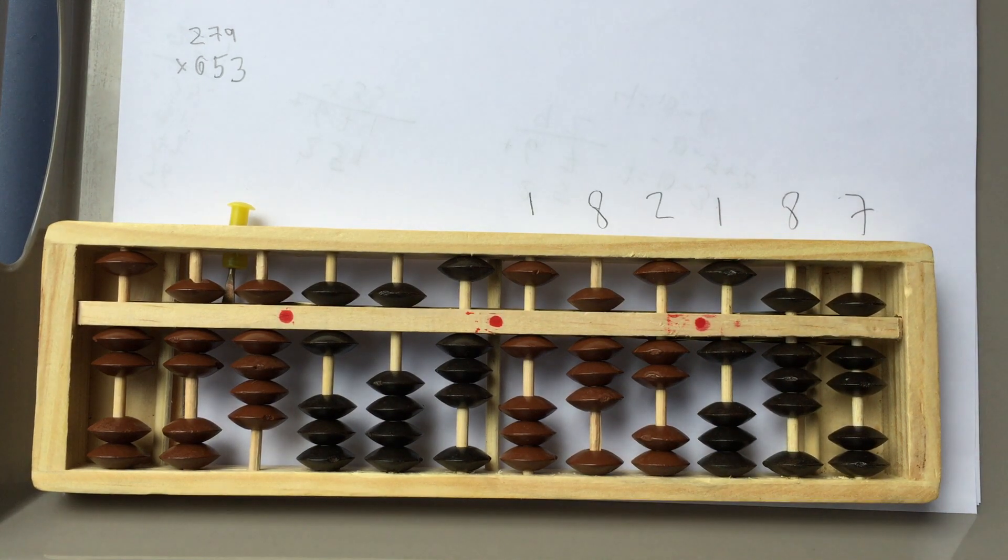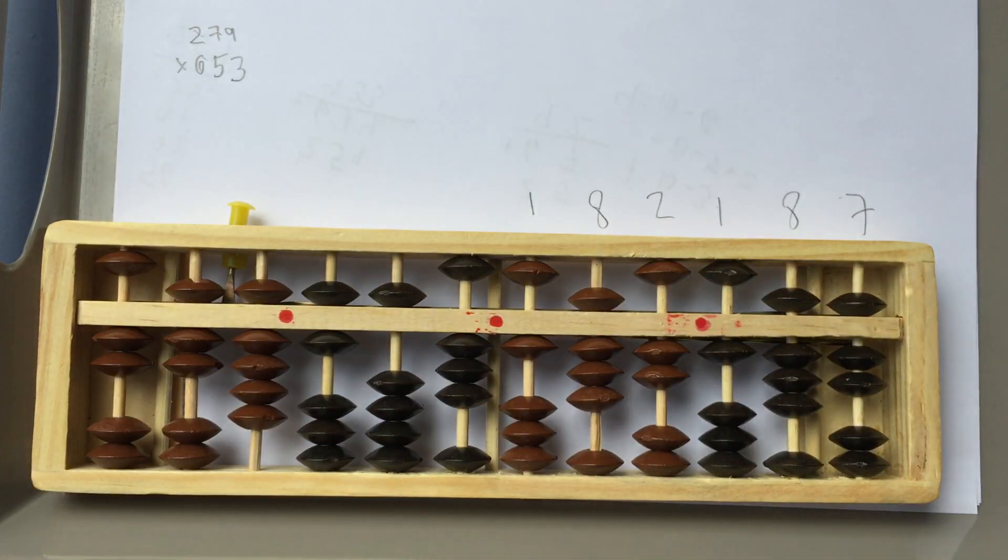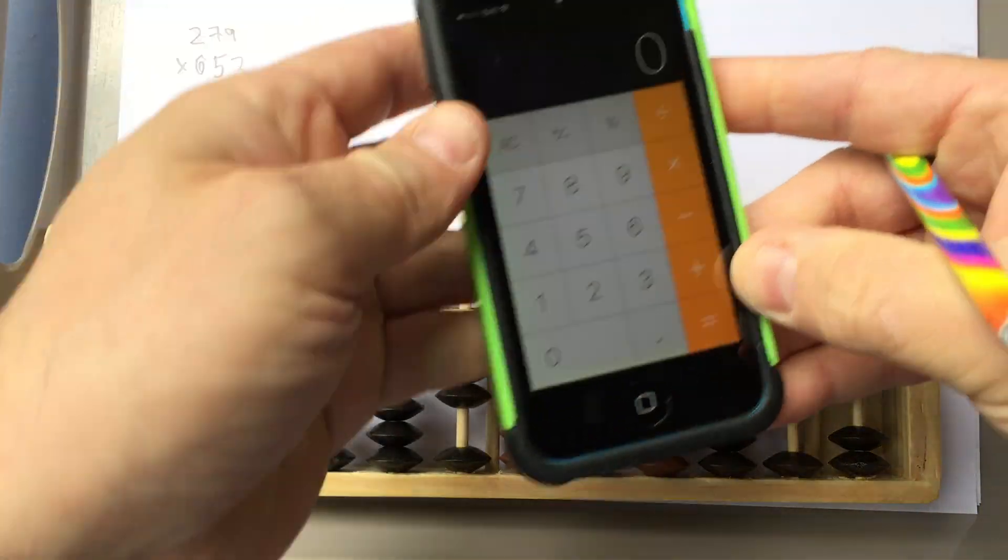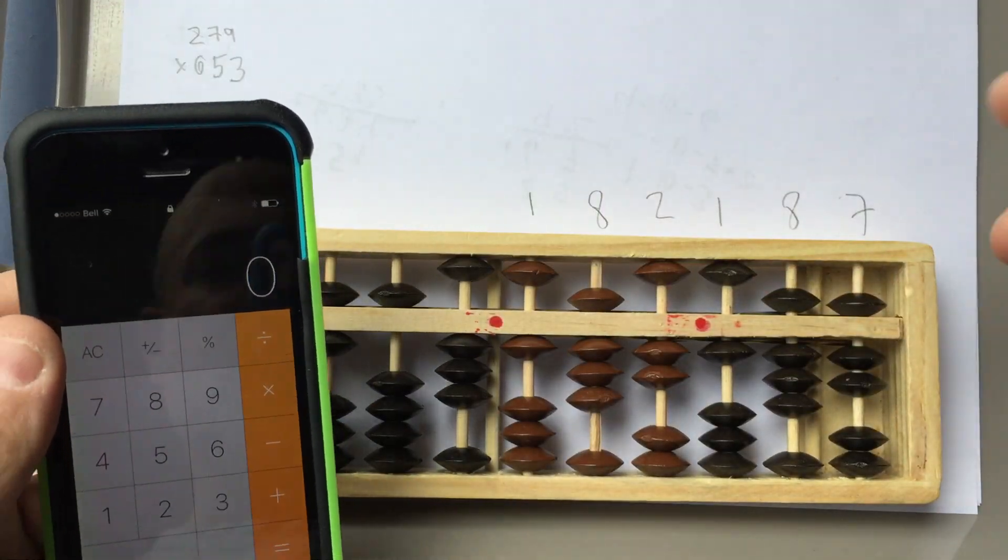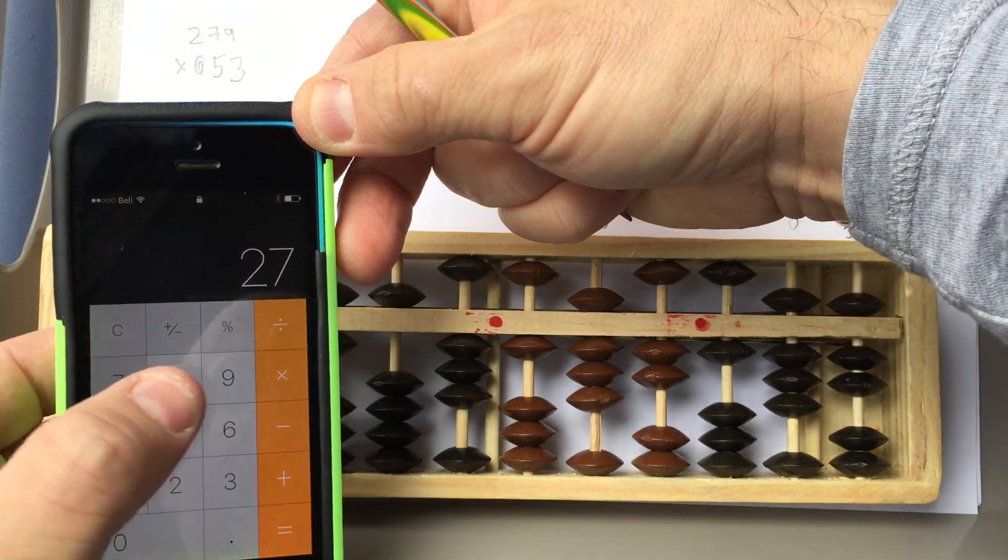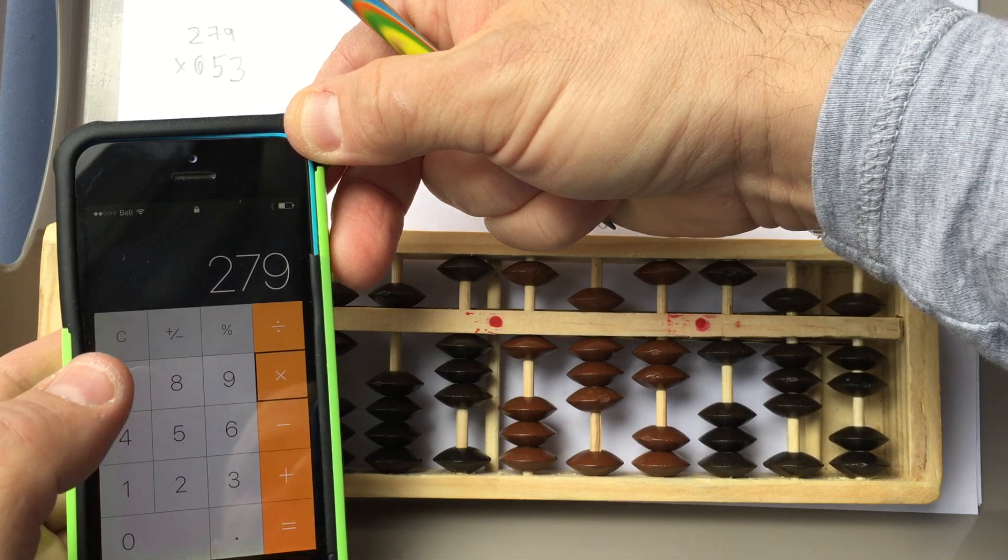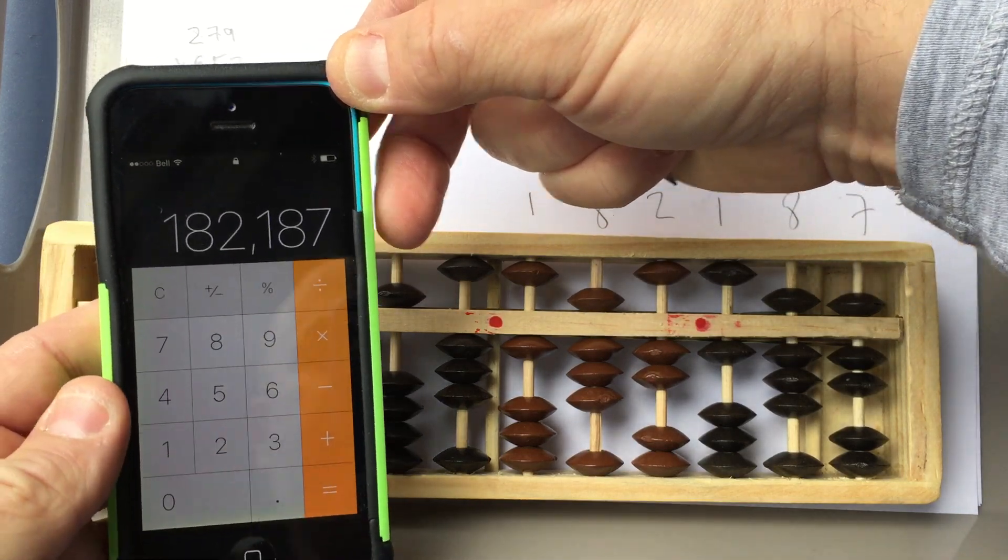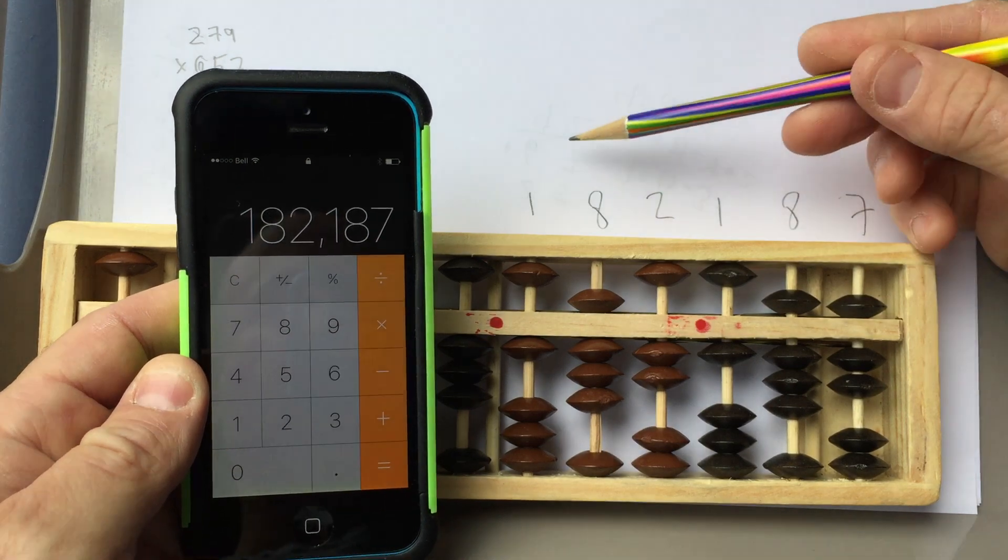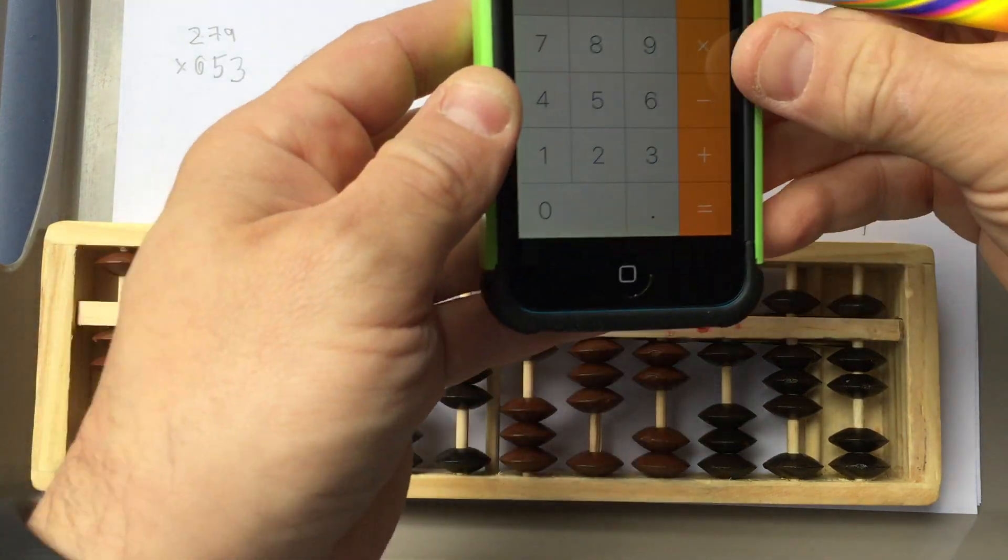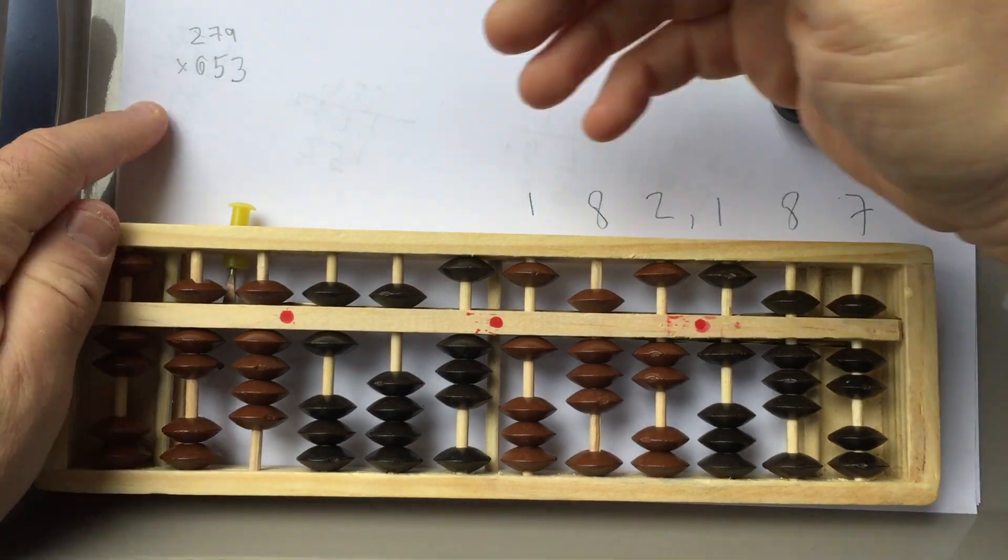I'm gonna get the calculator open here. One second. Okay. So we have 279 times 653. There you go. 182, 182, 187. Okay? So that's, you know, now,